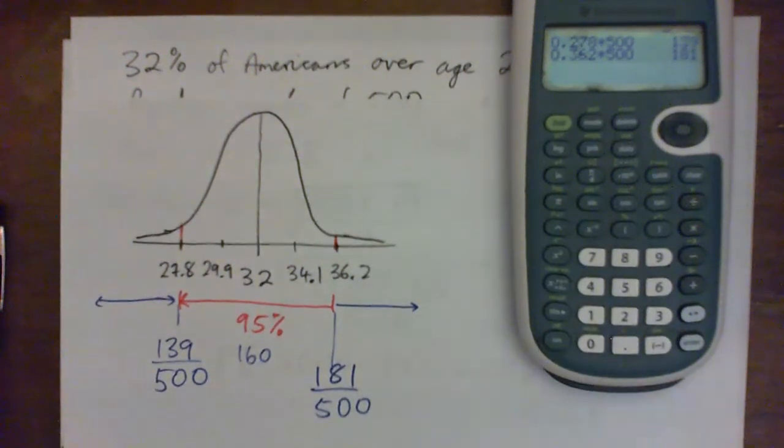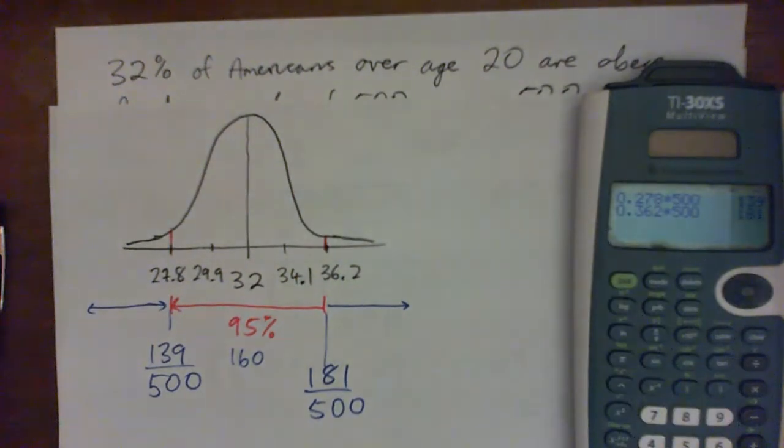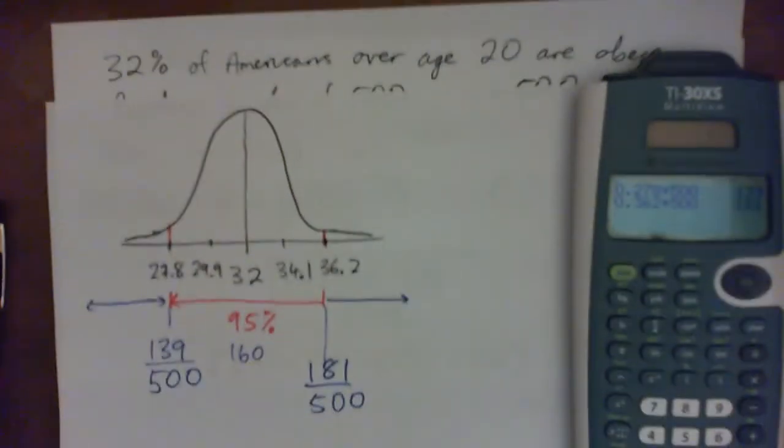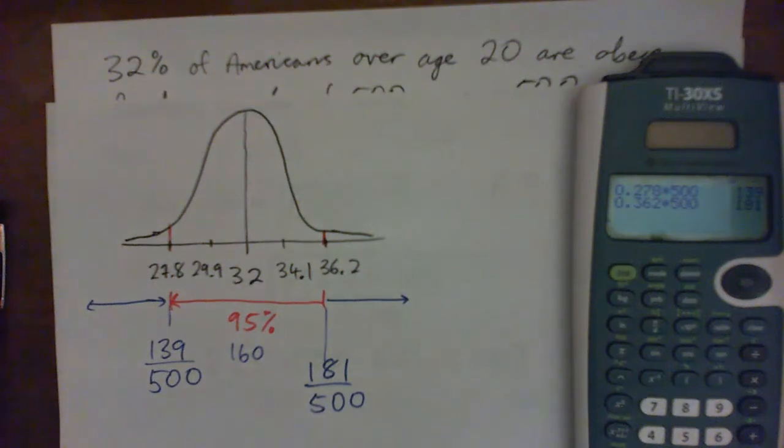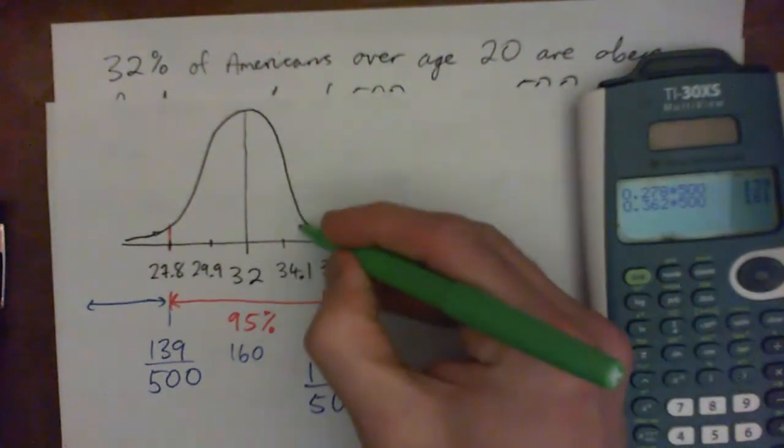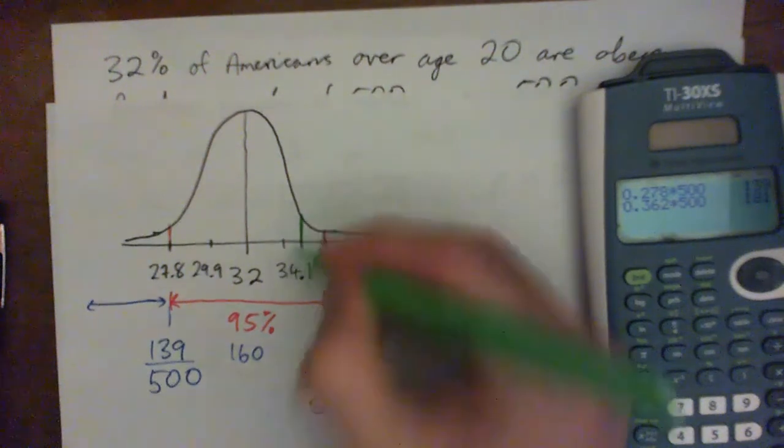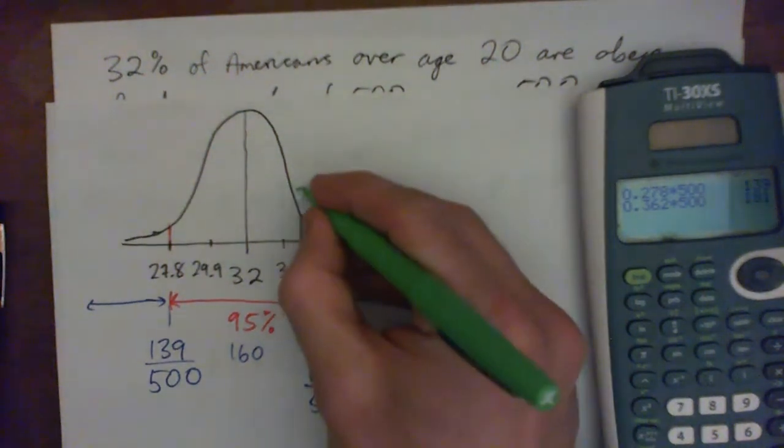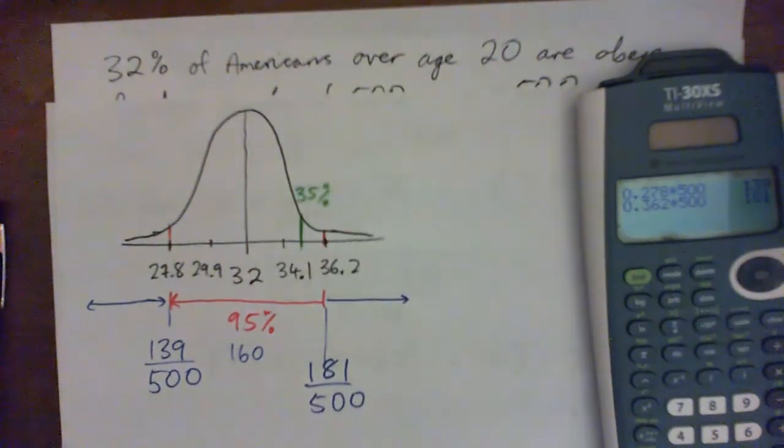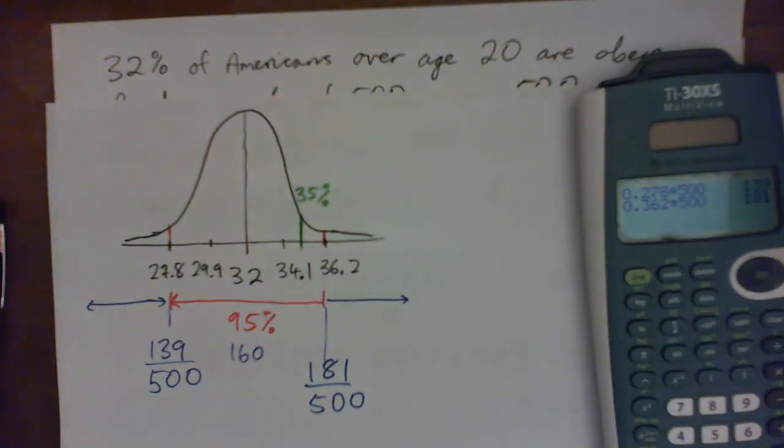So anyway, beating it to death and moving on to part B, which is kind of checking for your understanding of what this normal distribution is. It just asks you one question that says, would it be unusual to find a random sample of 500 Americans over 20 in which 35% were obese? So let's find 35% on that graph. So it's about there somewhere. So that's our 35%, and what do we think, is that unusual in the usual range or in the unusual range? In the usual range. And that's it.